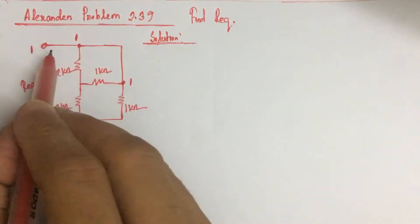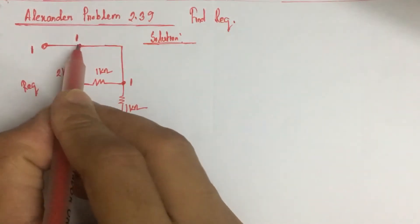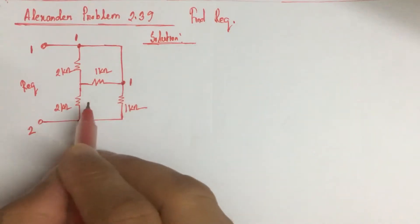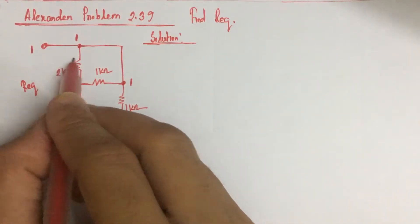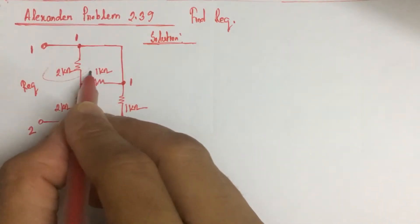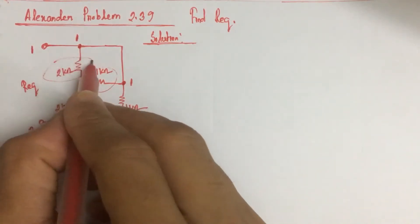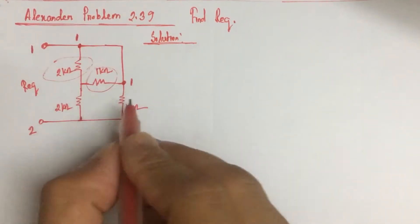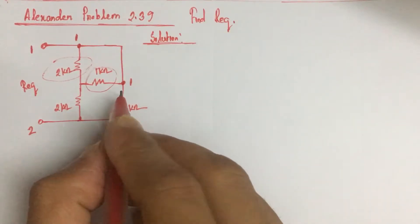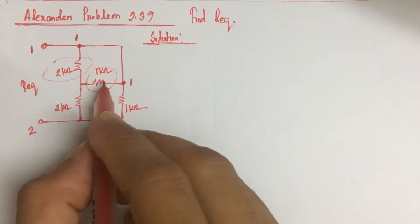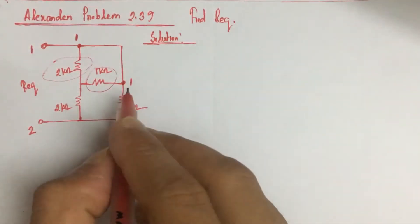Now we see that this is point 1, this is also point 1. Now this 2 kilo ohm resistance and this 1 kilo ohm resistance are parallel. So if we simplify the circuit by combining 2 kilo ohm and 1 kilo ohm as parallel resistance...